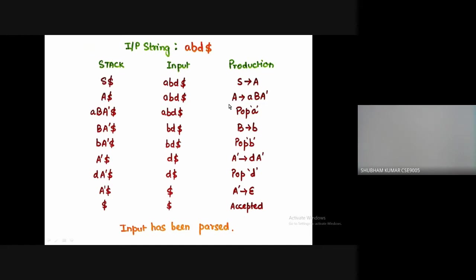We write the respective production of A and small a. In the next step, we need to get a terminal a, and when we replace it with capital A, it matches the first element of the input string, so we can pop it out.